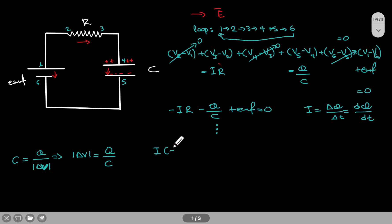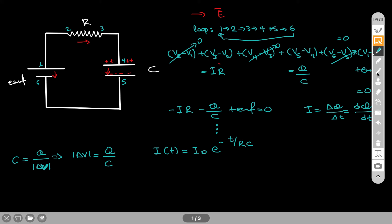But what we get from here is that the current that flows in this circuit will be I0 e to the minus T over RC. This is what the current will look like.